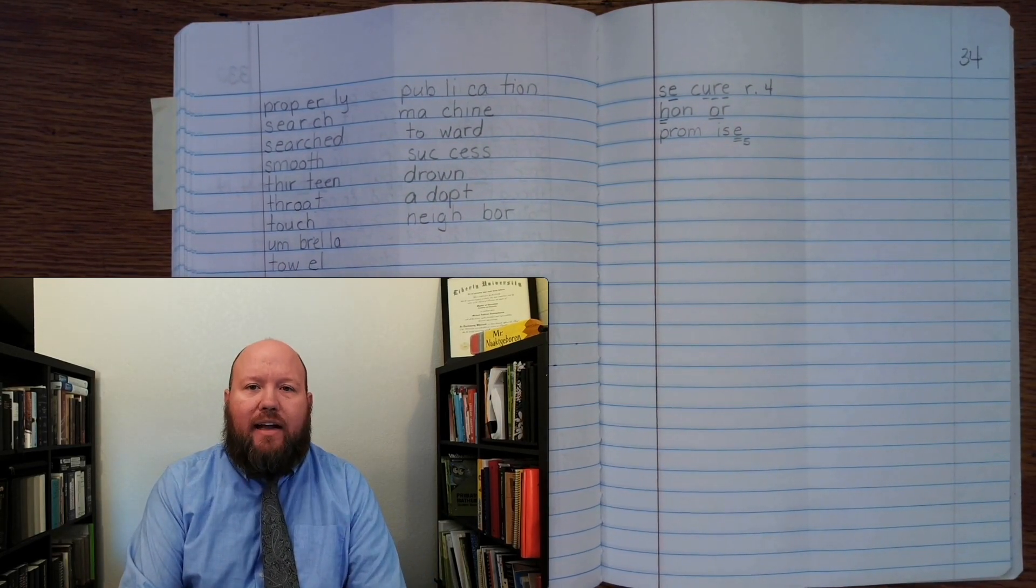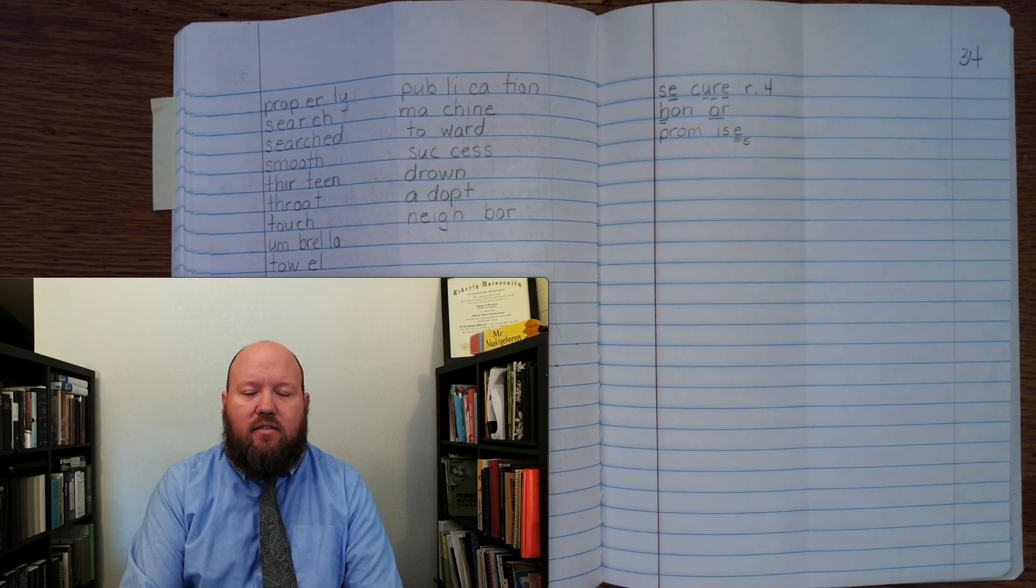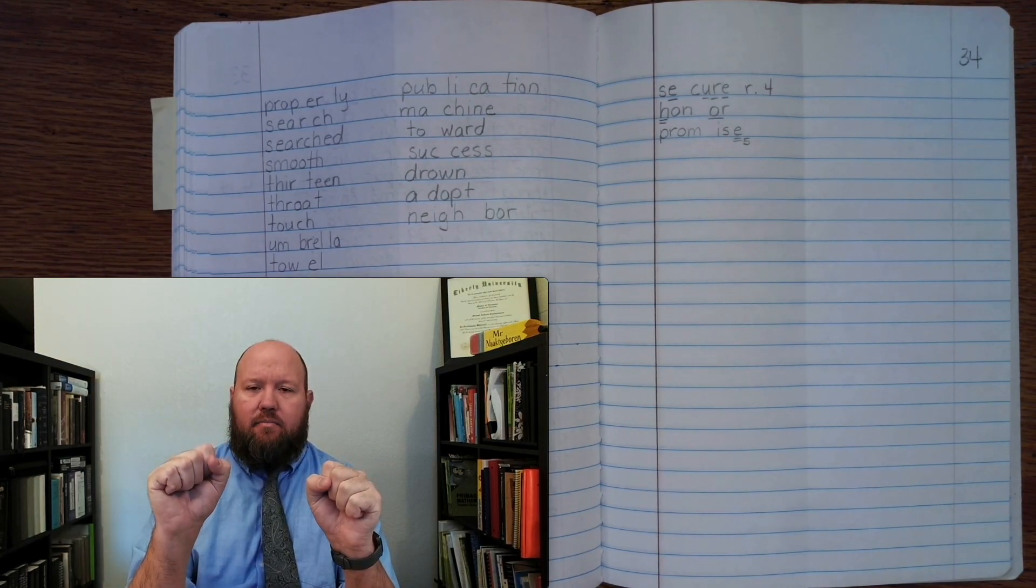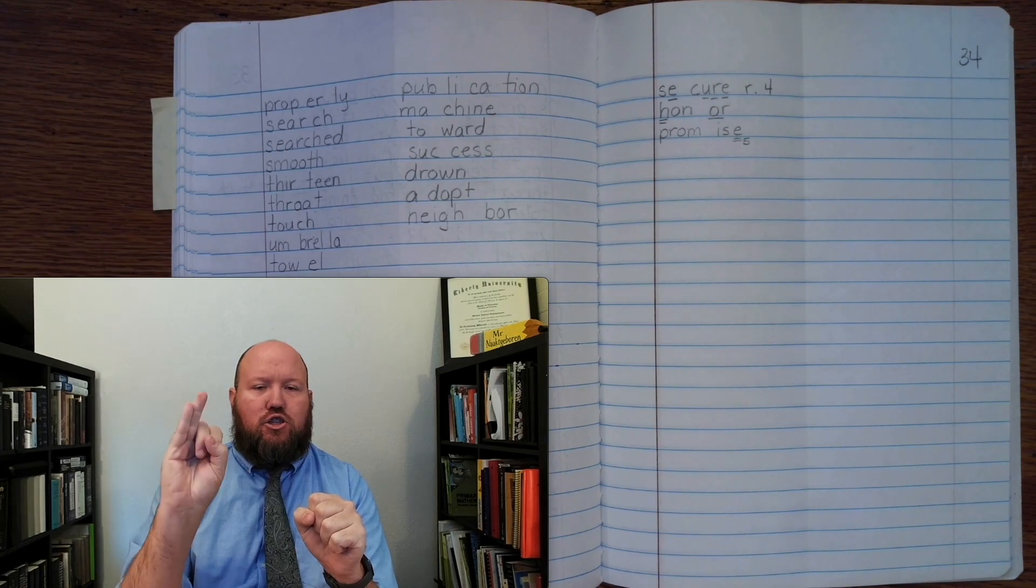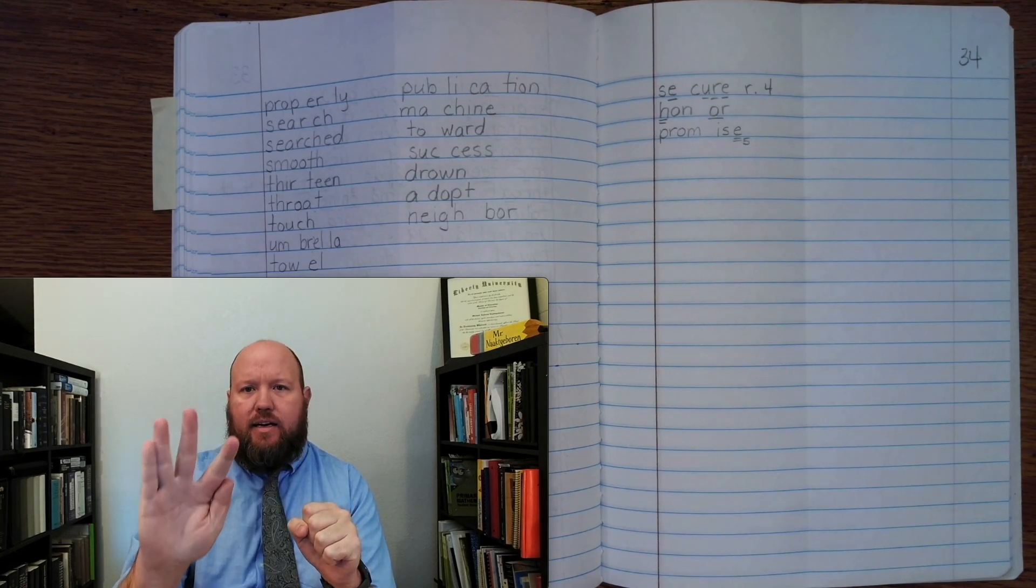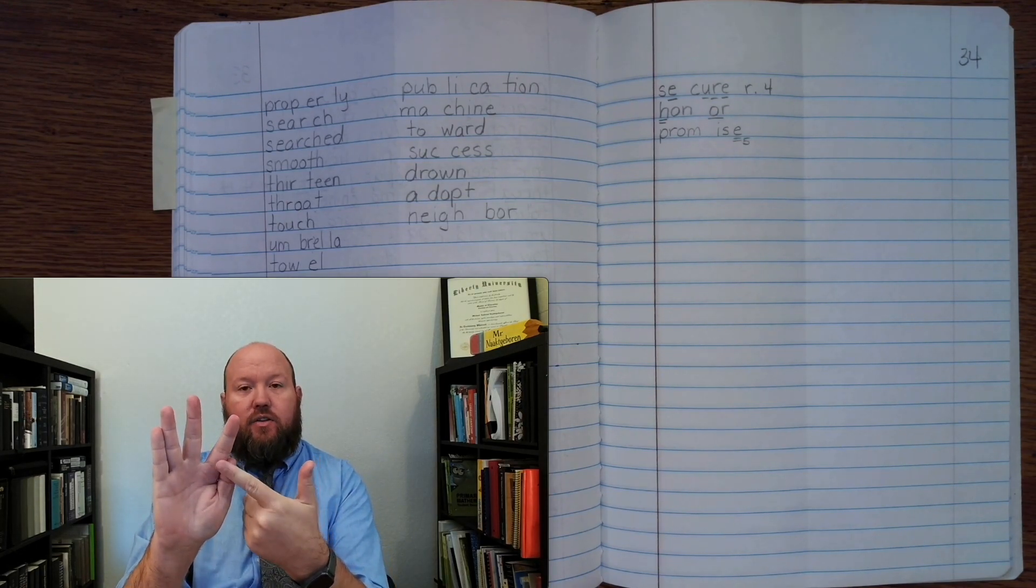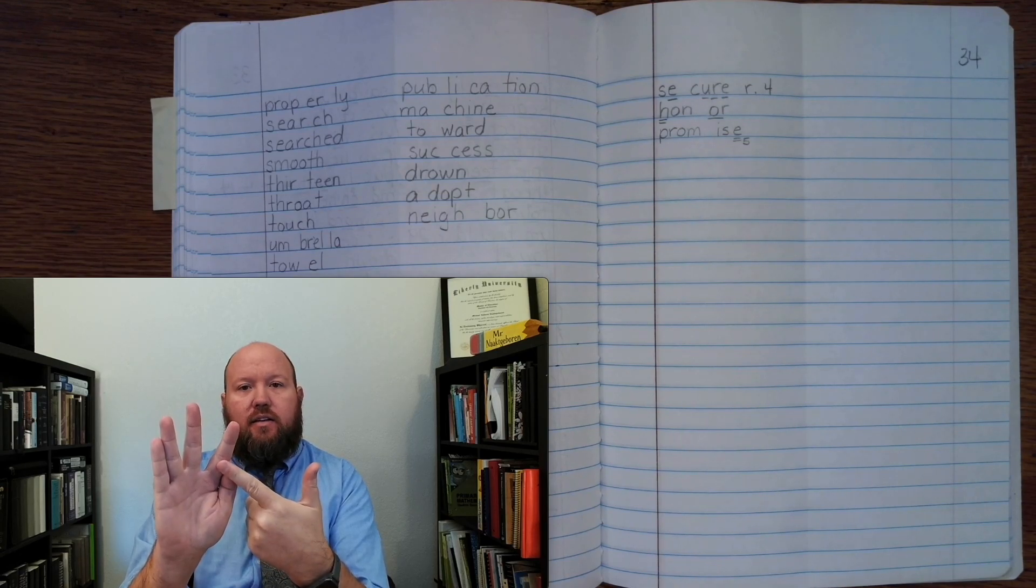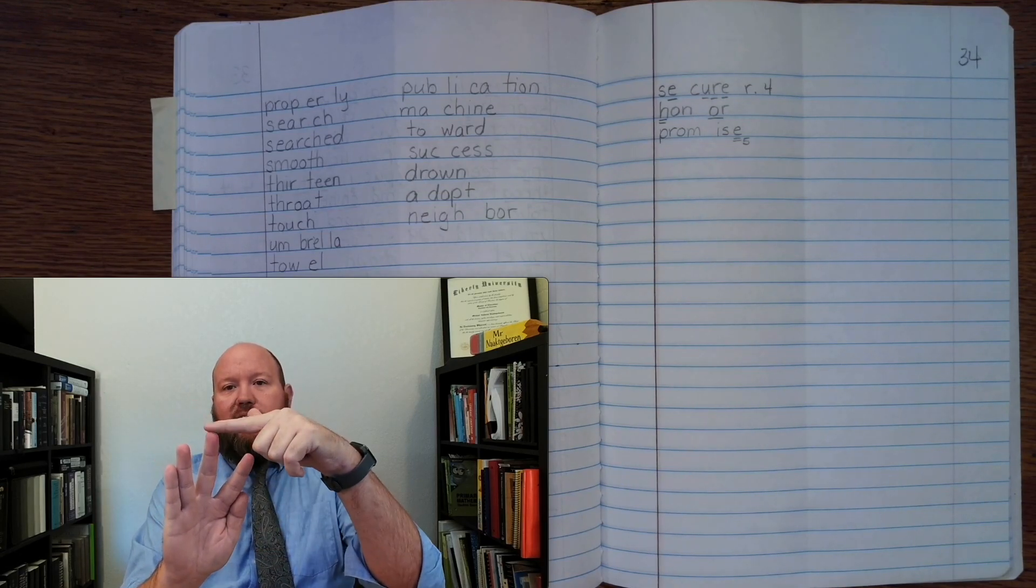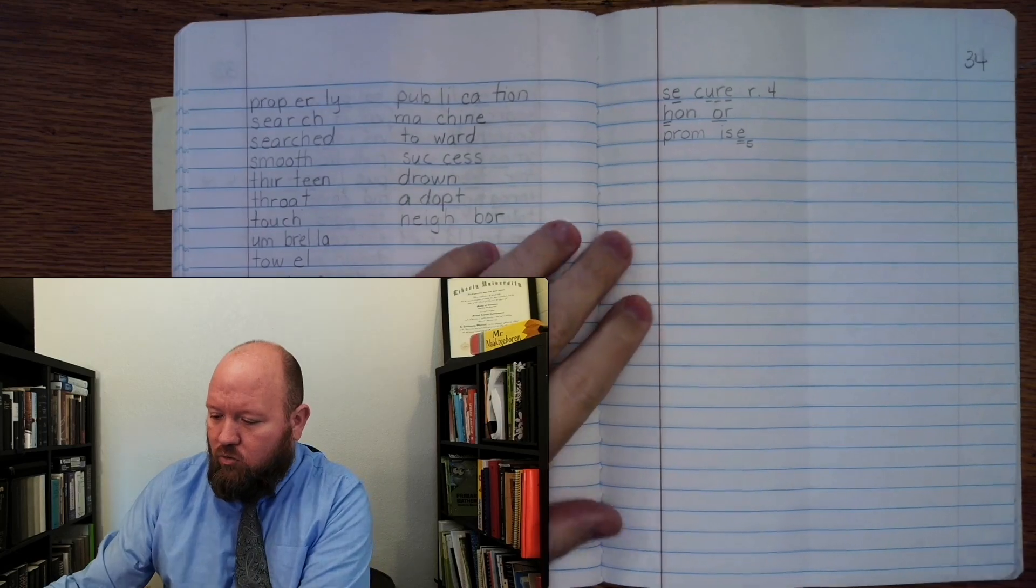The next word is wreck. Like, don't wreck the car. Wreck. Base word, wreck. R, E, K. Wreck. You know, we're going to use our two-letter K. Okay? K can only be used after a single vowel that says its first sound. Right?